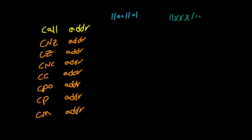We have eight CALL instructions. This is the unconditional CALL with the opcode CD, and these are seven conditional calls with their opcodes. Obviously we have three bits which would cover each one of these different states.